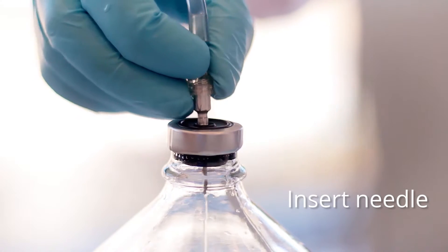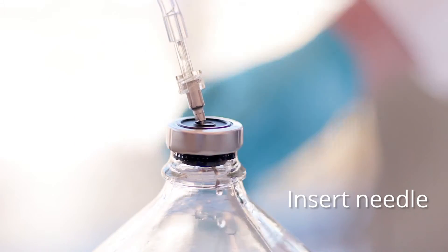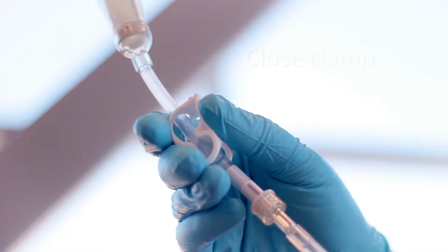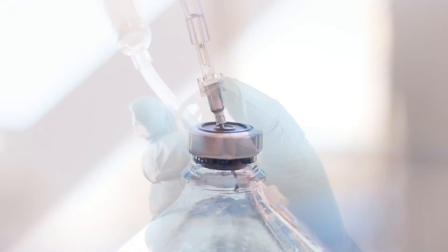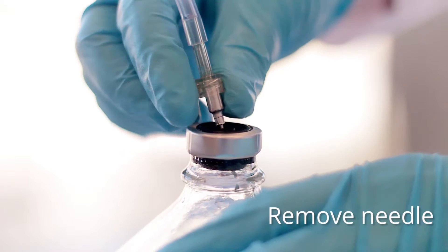Insert the needle into the septum on the receiving container. Close the slide clamp on the distal end of the quick test. Remove the needle from the receiving container.